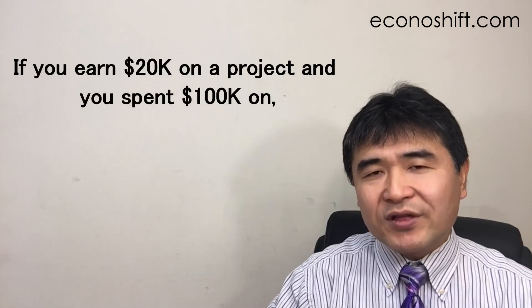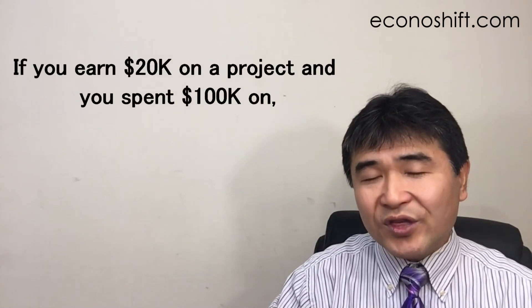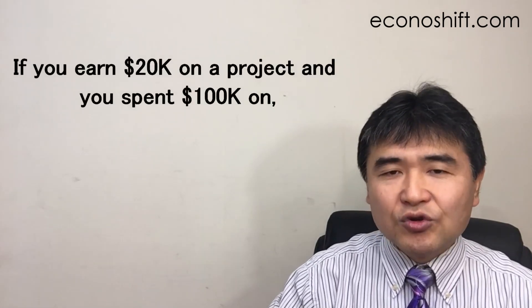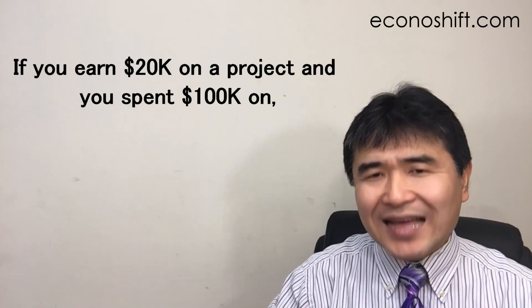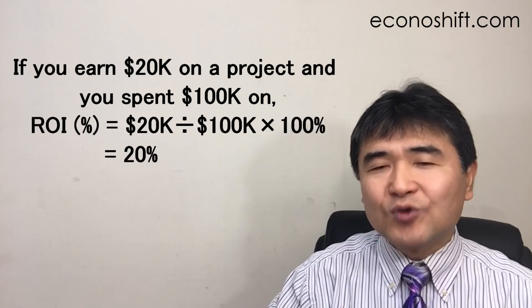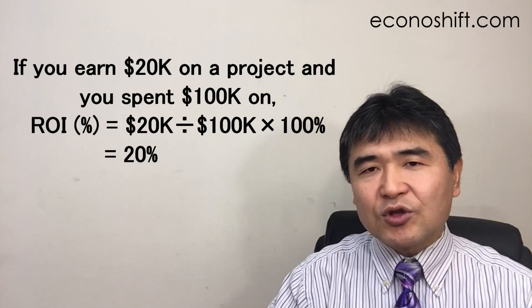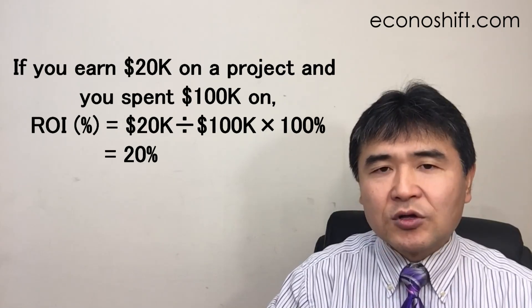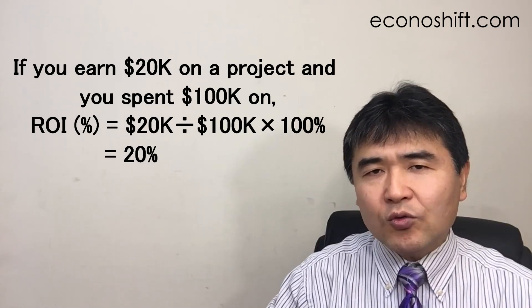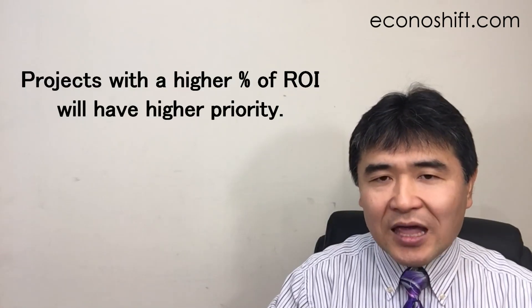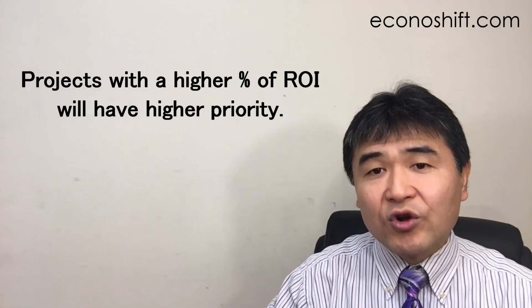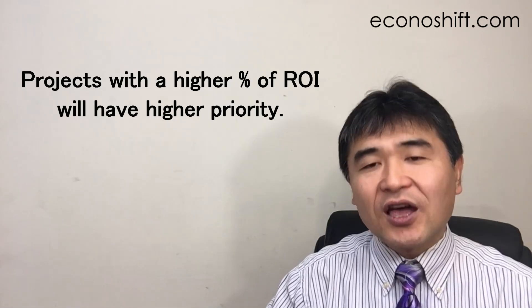It's a percentage of the profit amount obtained from the project divided by the amount you spend on the project. For example, if you earn $20,000 on a project and you spend $100,000 on it, that will be $20,000 divided by $100,000, so the return on investment will be 20%. Projects with a higher percentage of return on investment will have higher priority.